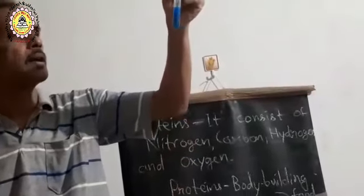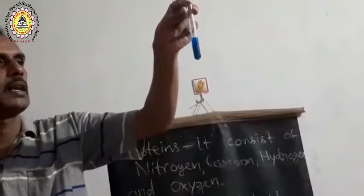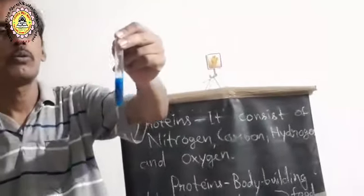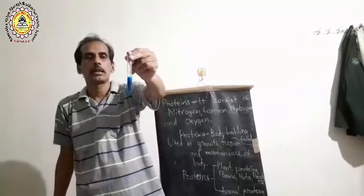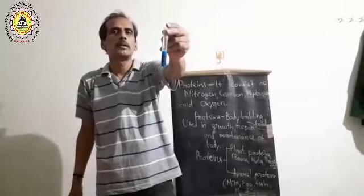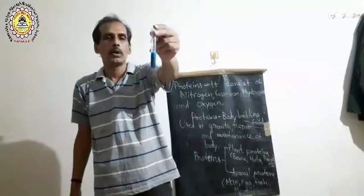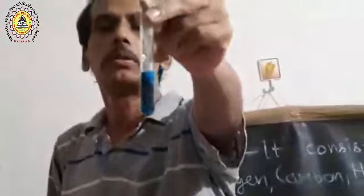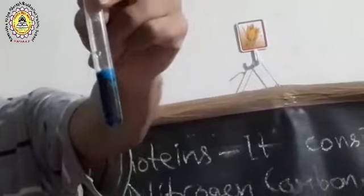The moment we added copper sulfate and sodium hydroxide, the color of the test tube has changed to violet. This violet color clearly indicates the presence of protein. So if a particular food item causes the solution to turn violet in color, it proves that protein is present in that food item. This confirms that proteins are present in pulses.